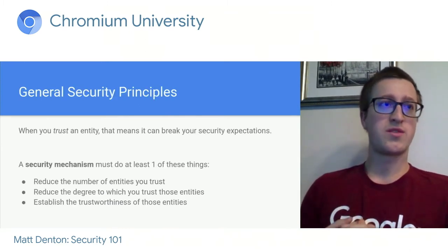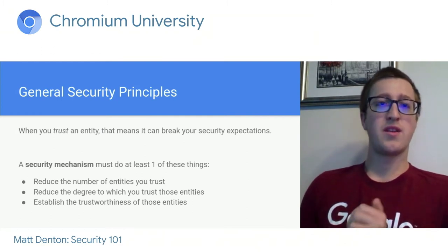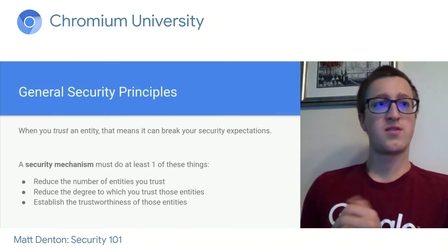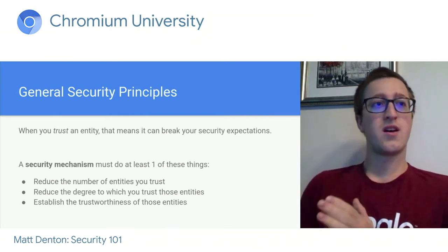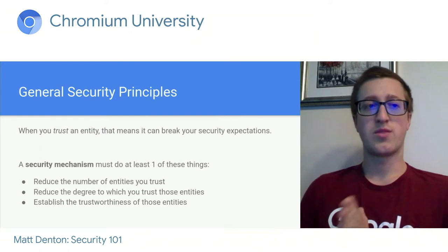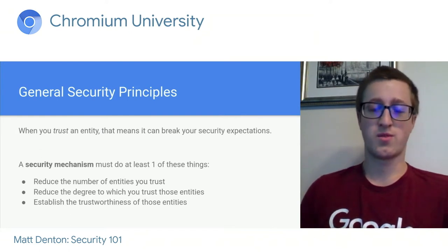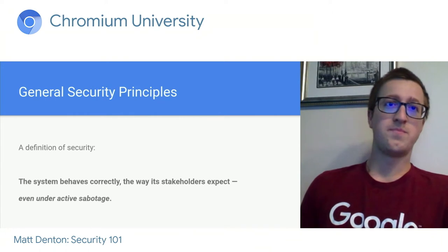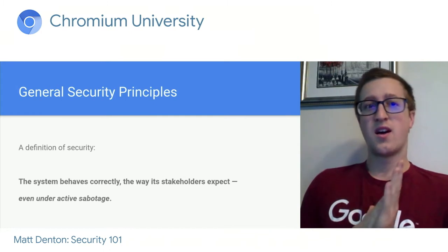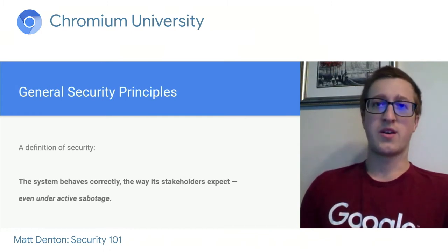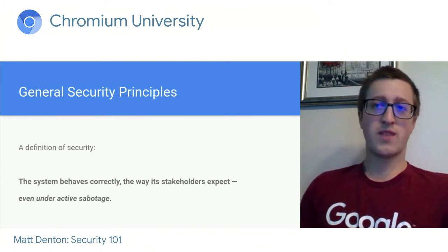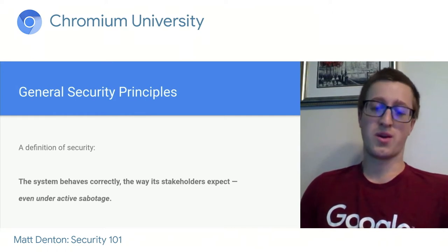Some quick general security principles: when you trust an entity, that means it can break your security expectations. A security mechanism must do one of three things: either reduce the number of entities you trust, reduce the degree to which you trust those entities, or establish the trustworthiness of those entities. The general definition of security is that the system behaves correctly the way its stakeholders expect, even under active sabotage — it's not enough to be correct when a website is behaving normally.